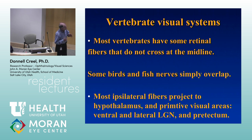Most vertebrates have some retinal fibers that do not cross — fish, snakes, amphibians — but there are no absolutes, and there are no absolutes even between closely related species, like just different kinds of toads. Some have them and some don't. In fact, some stay ipsilateral but then after they get past the chiasmic area, they go back over to the contralateral. There are just all possibilities.